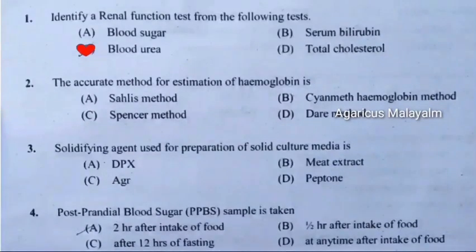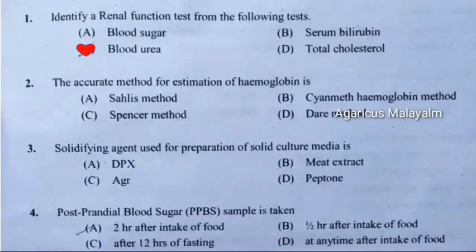Second question: The accurate method for estimation of hemoglobin is. Correct answer is Option B: Cyanomethemoglobin method.